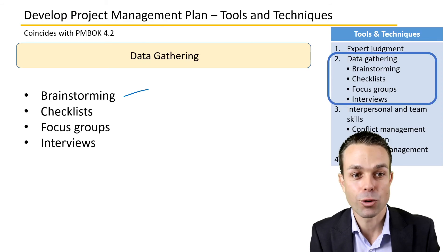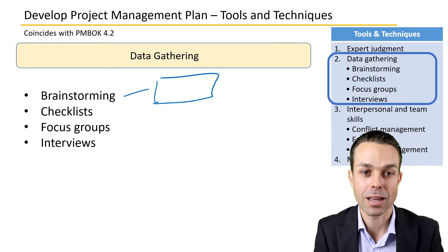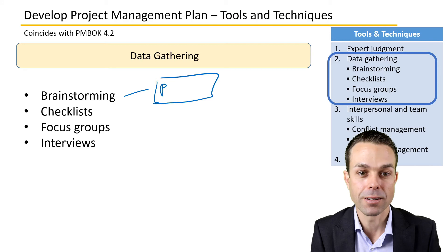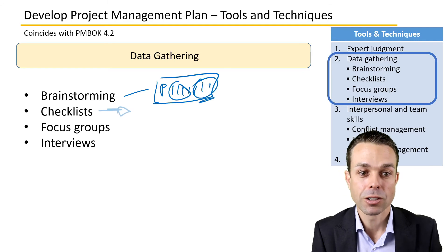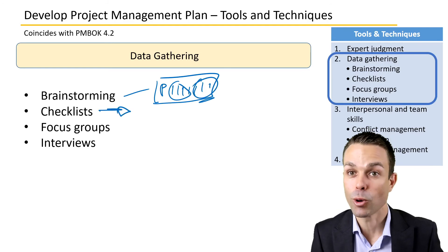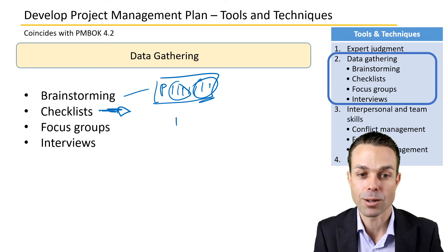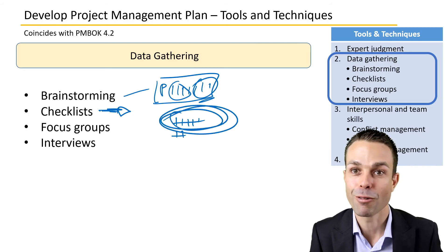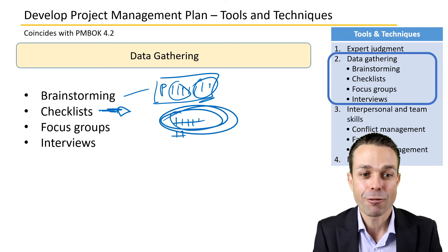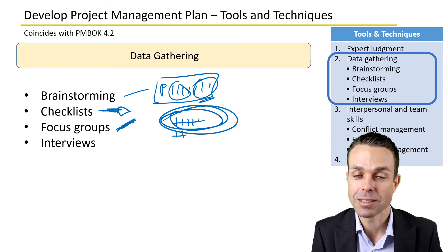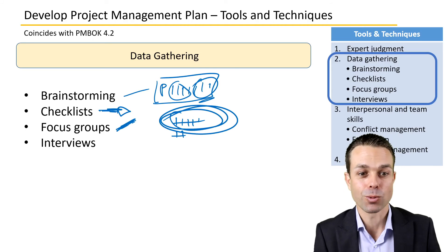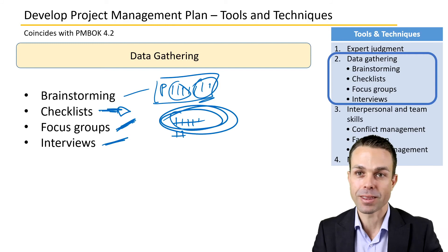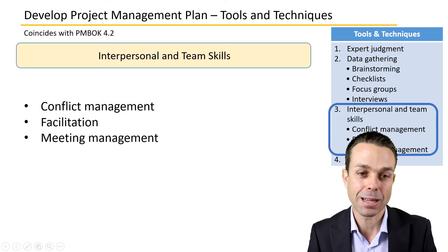You'll be data gathering from various experts across the organization. Brainstorming involves getting everyone together, identifying the problem, writing down all the ideas, and grouping them. Checklists help you track how often items occur and identify what to focus on. Focus groups involve getting people together, observing how something is used, and gathering customer feedback. Interviews are usually one-on-one and used to gather information that way.